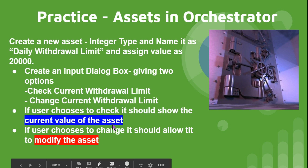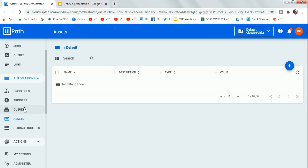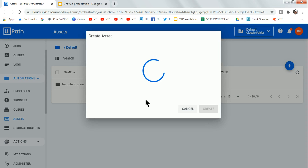So we need to see how to get the current value of the asset and how to modify the asset. Please pause the video and try it on your own first. Let's get started — the very first thing I'll do is go to Orchestrator, click on Assets, and create an asset by clicking on the plus sign.